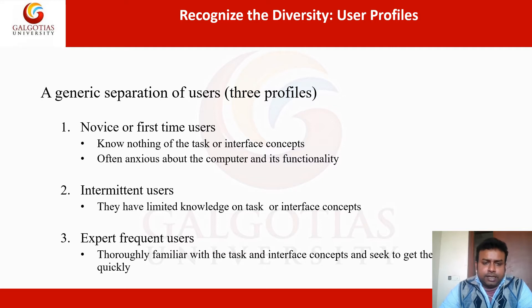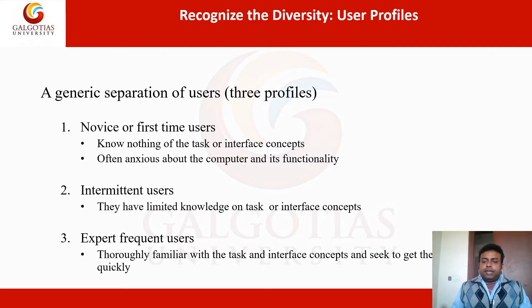In a generic division, we can divide users into three different groups: novice or first-time users, intermediate users, and expert users. Novice users basically don't have any knowledge about the tasks they have to perform in any particular interface or software. They are unaware of the software and how to use it. Sometimes they may feel anxious about the computer and its functionality. For example, if a layman came to use a computer, they may feel fear — thinking that if they touch the keyboard, something bad might happen.